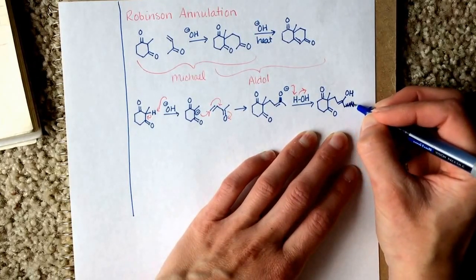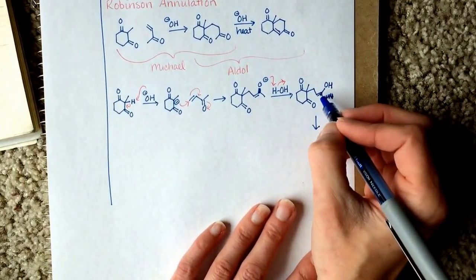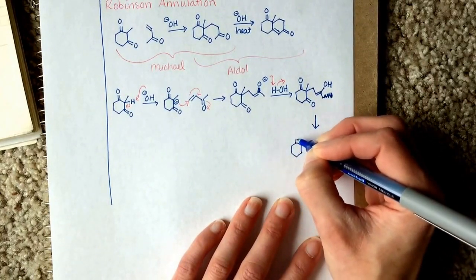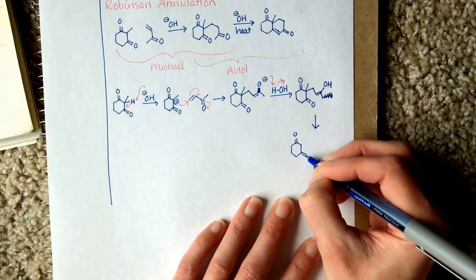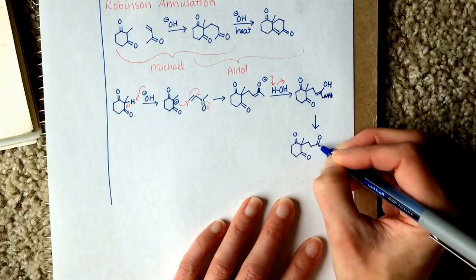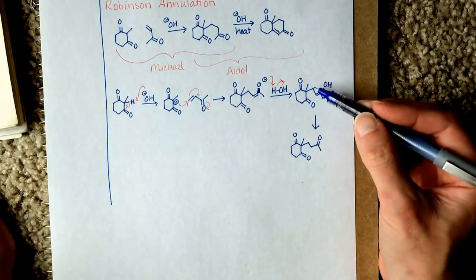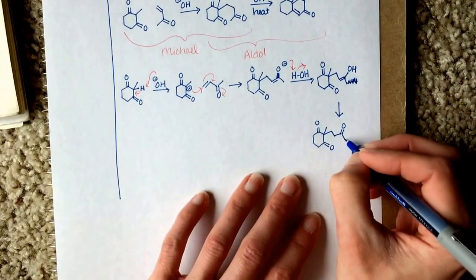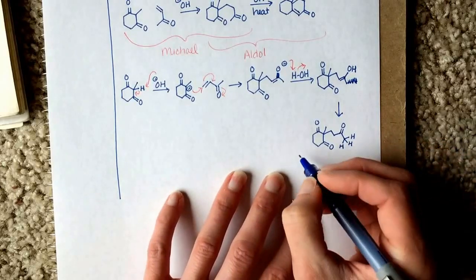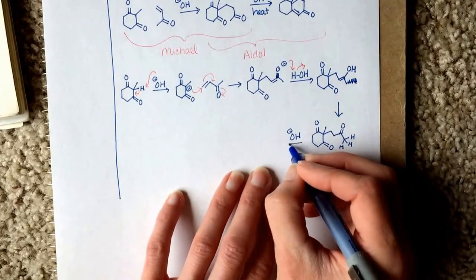We need to do a keto-enol tautomerization right here. We're just shifting the position of the double bond and also moving a hydrogen. One, two, three, four. Now I'm going to draw in our alpha hydrogens.